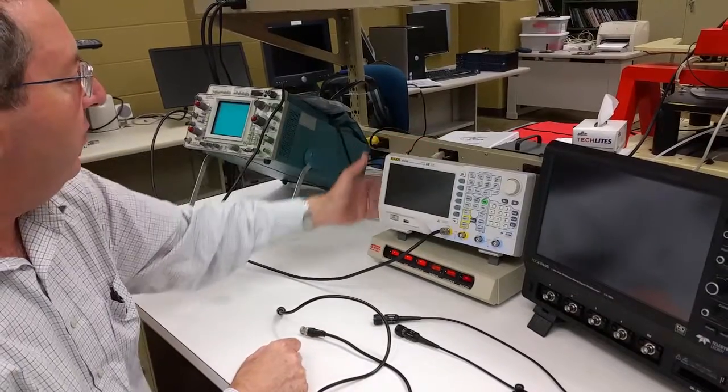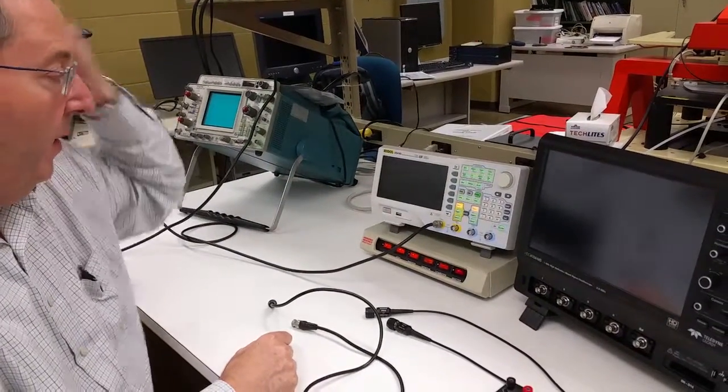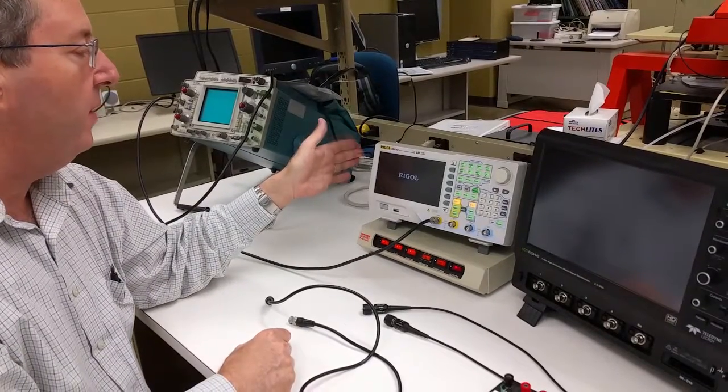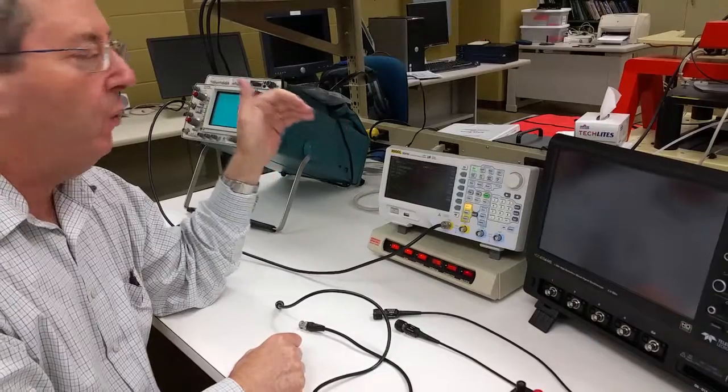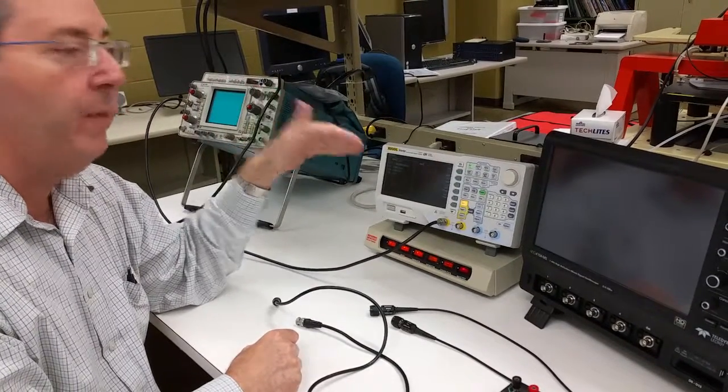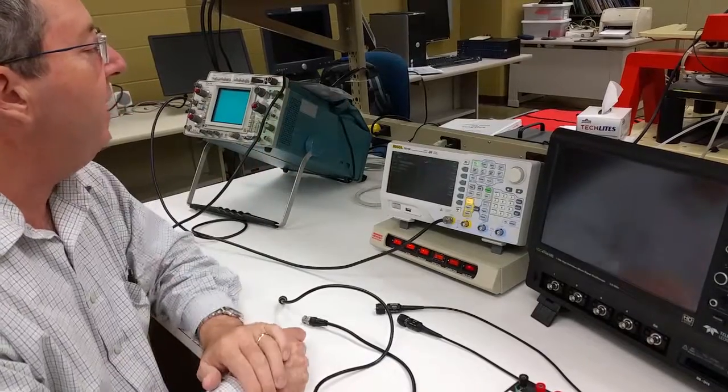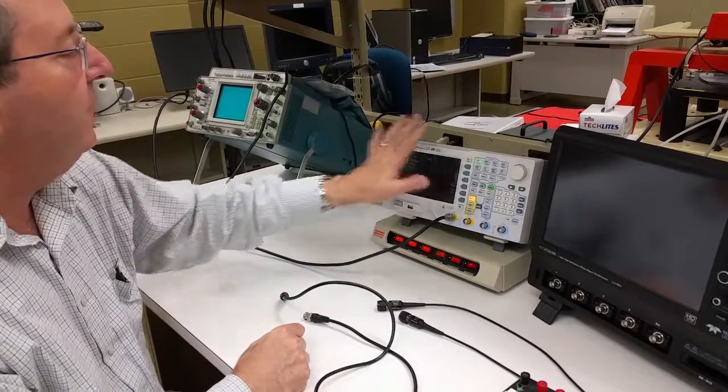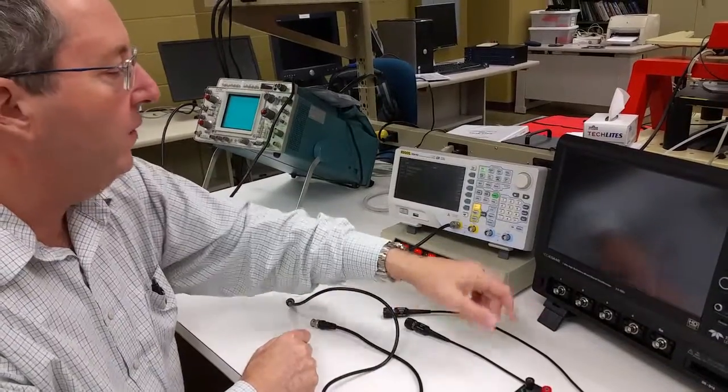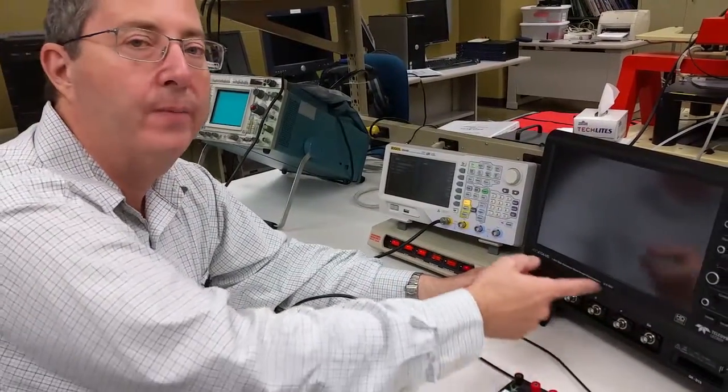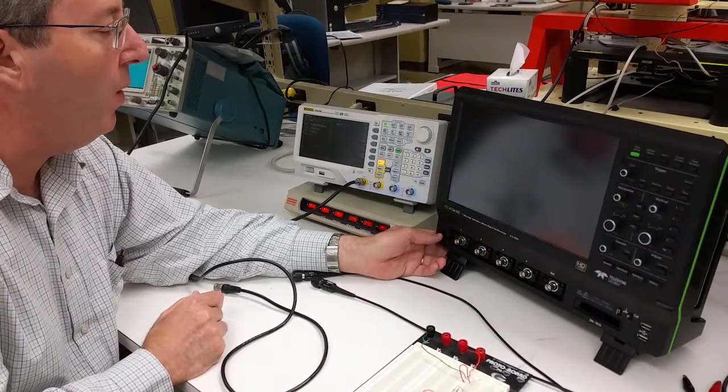So we're going to start with a function generator. Here's the on button. Let's turn it on. A function generator creates a time-varying voltage. We can change many of the properties of this time-varying voltage and I'll show you that in just a second. I want to show you the basic features of it and then we'll get to the oscilloscope. Let me turn on the oscilloscope now because it may take a few seconds to boot up.